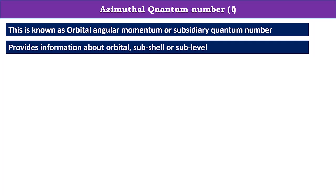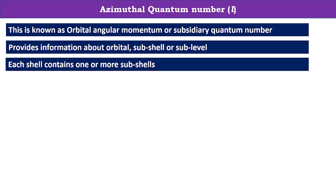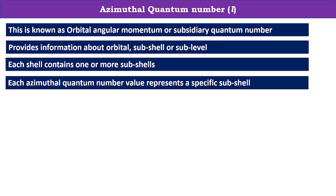A subshell or sublevel means it is the sub-portion of the main shell or principal shell. Each shell contains one or more subshells. Each azimuthal quantum number value represents a specific subshell.